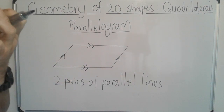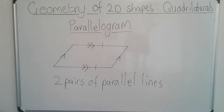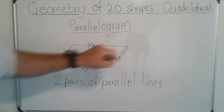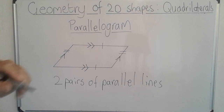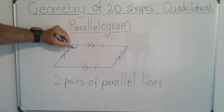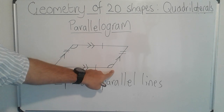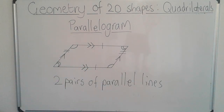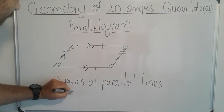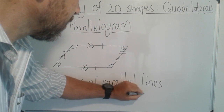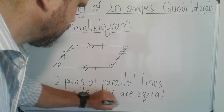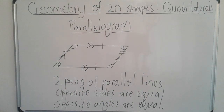The other feature of a parallelogram is that opposite sides are equal — this side equals that side, and this side equals that side. Another feature is that opposite angles are also equal — this angle equals that angle, and this angle equals that angle. So to summarize: a parallelogram has two pairs of parallel lines, opposite sides are equal, and opposite angles are equal.